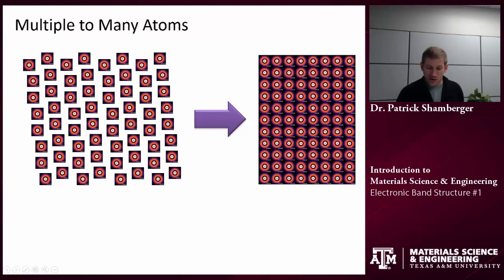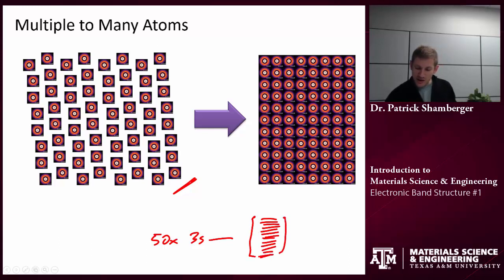This happens more and more. So remember, the number of orbitals in equals the number of orbitals out. So if I start off with 50 3s orbitals, I'm going to end up with a very closely stacked series of energy levels. And there will be 50 energy levels in here.